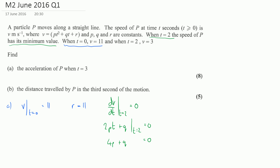There's one condition left that hasn't been used yet: when t equals 2, v equals 3. That is to say v evaluated at t equals 2 gives us 3. Substituting in t as 2 we get 4p plus 2q, and don't forget we also have plus 11, which is equal to 3.